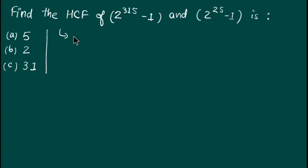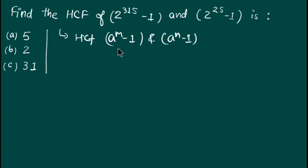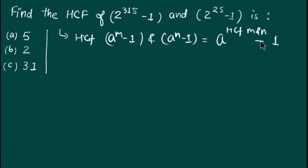There is a property of indices: HCF of a raised to power m minus 1 and a raised to power n minus 1. When we have two numbers in the form a^m - 1 and a^n - 1, the HCF of these two numbers is a raised to power HCF(m, n) minus 1, where m and n are the exponents of the common term a.